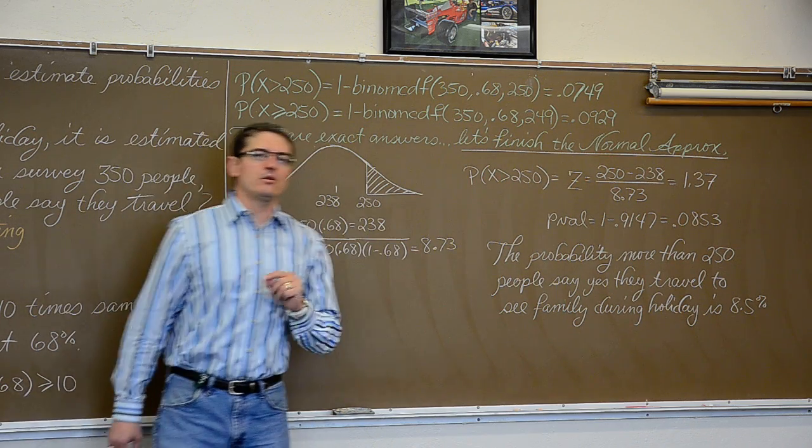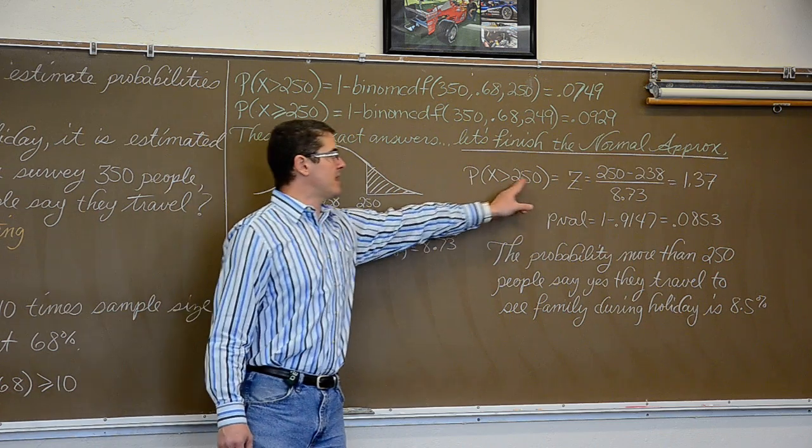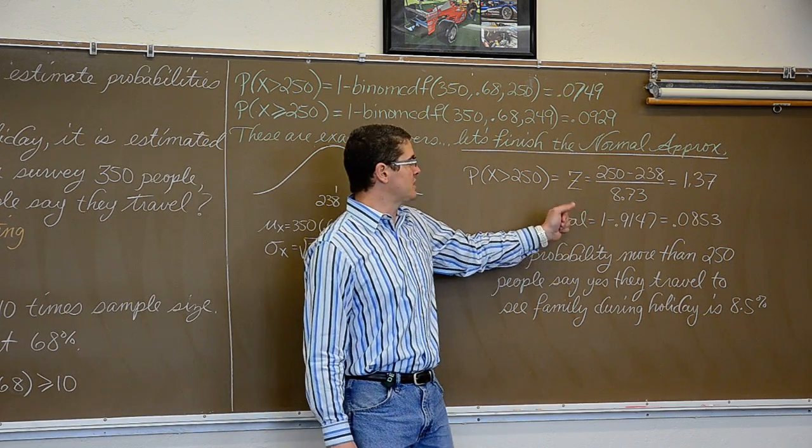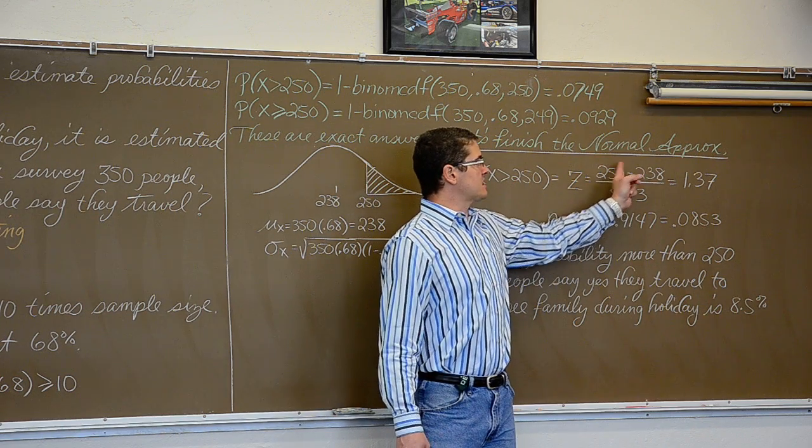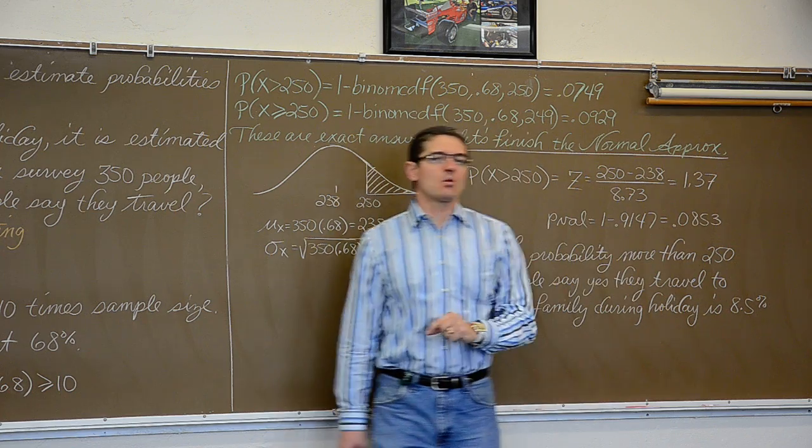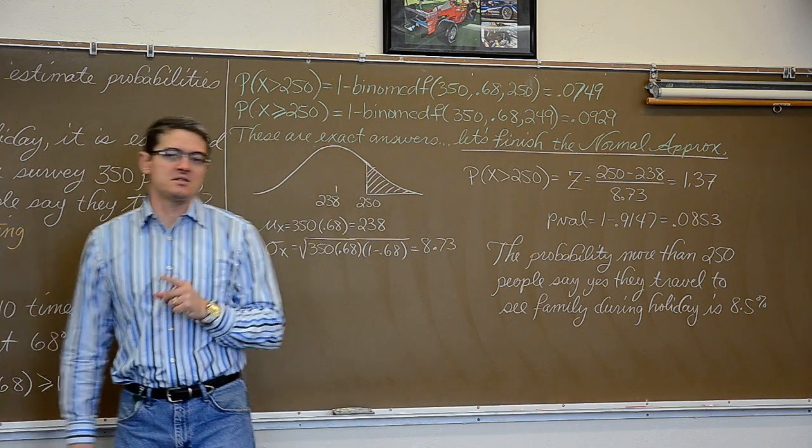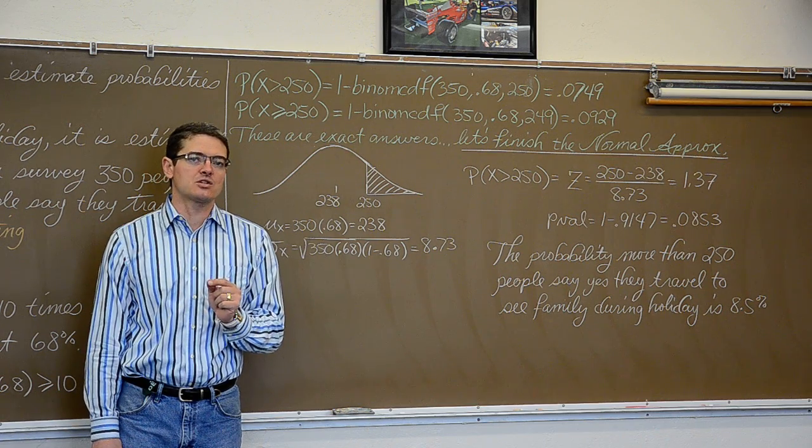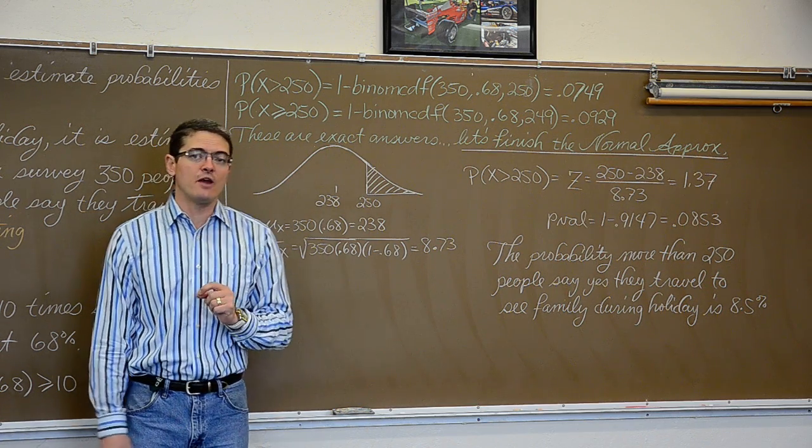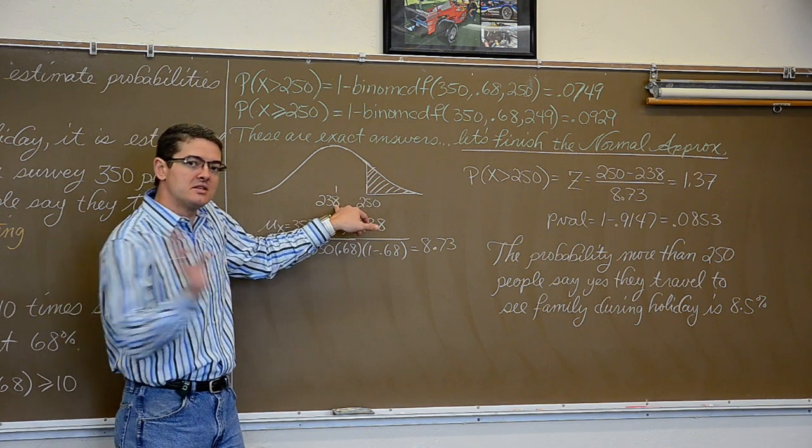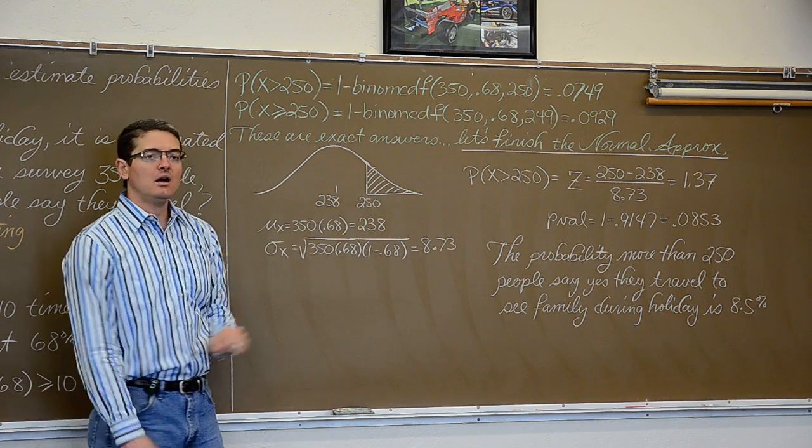So the probability that x is greater than 250 is equal to the z-score which is estimate minus the parameter over standard deviation. That gives me a z-score of 1.37. Don't forget z-score, the unit of measure for z-score is the number of standard deviations your statistic is away from the mean. So 250 is 1.37 standard deviations to the right of 238.